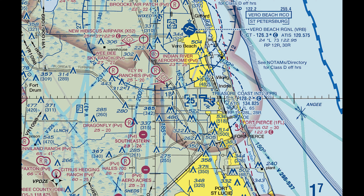We are approaching Fort Pierce Airport from the southwest, heading inbound for a full stop landing. The first thing to do would be to get the ATIS for important weather information and to find the runway in use.